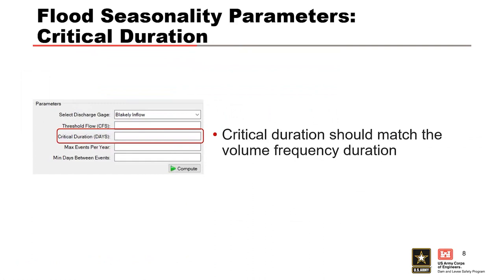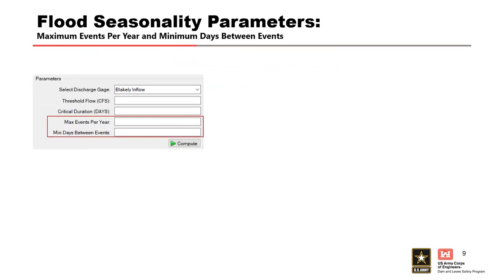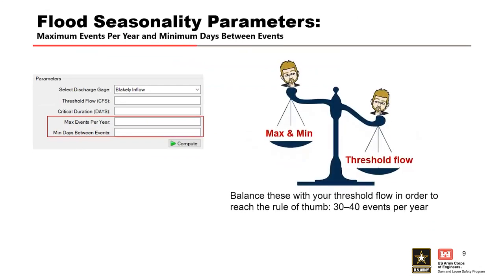The next input needed is critical duration, which should correspond to the critical duration for the inflow volume frequency curve. So if you have a four-day critical duration for your basin, you should put four in here for this input. The final inputs needed are the maximum events per year and the minimum days between events. These values should be estimated by inspecting your data — how many floods above the threshold occur in a year, and how far apart do flood events need to occur to be considered independent? You can also use a guess-and-check approach to balance these inputs with your threshold flow to come up with 30 to 40 events.